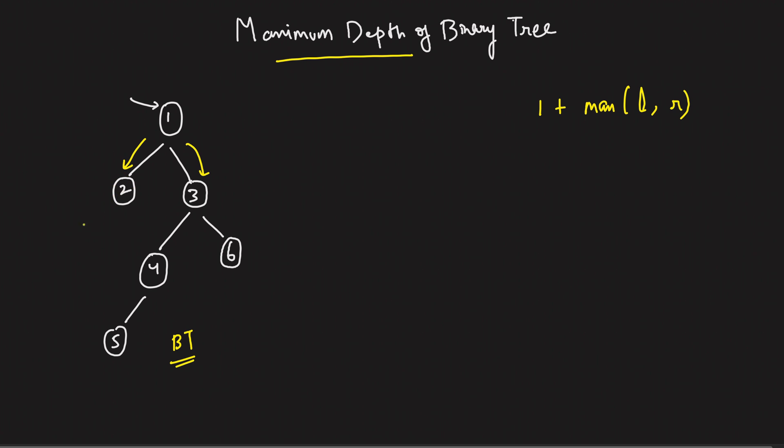So 1 plus max of left will be 0 for this guy. Max, because for this node 2, if I write 1 plus max of left will be 0 comma, what's the right? Again, 0. So can I say for this node 2 guy, the height is indeed, like if you are standing over here, the height is indeed 1 plus max of 0 on left or 0 on right, that's 1.